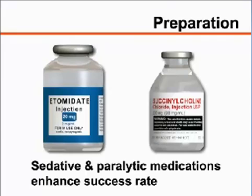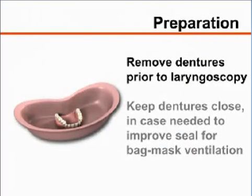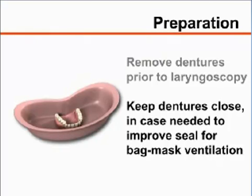The use of sedative and paralytic medications greatly enhances the success rate of endotracheal intubation. However, their use is beyond the scope of this video. Remove the patient's upper and lower dentures, if present, immediately prior to laryngoscopy. Keep the dentures close at hand so that they may be rapidly reinserted to improve the mask seal if bag mask ventilation is required.